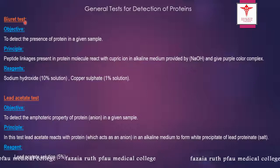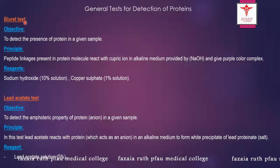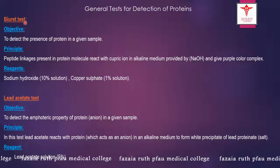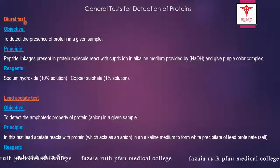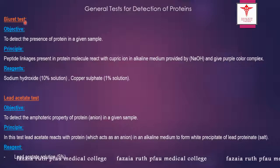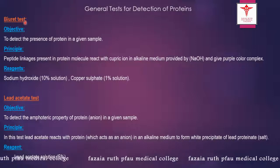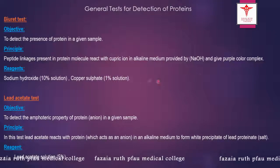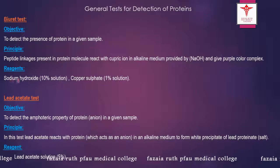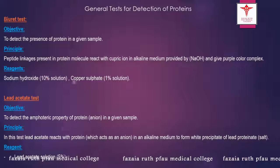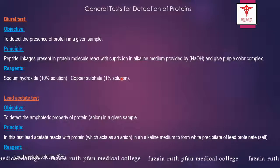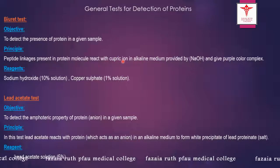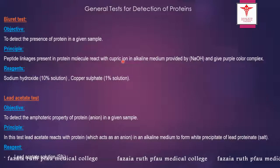The first is the Biuret test, done to detect the presence of protein in a given sample. The principle is that the peptide linkages present in the protein molecule react with cupric ions in alkaline medium provided by sodium hydroxide and give a purple color complex. The reagents used are 10% sodium hydroxide solution and 1% copper sulfate solution.